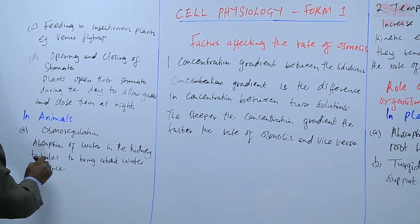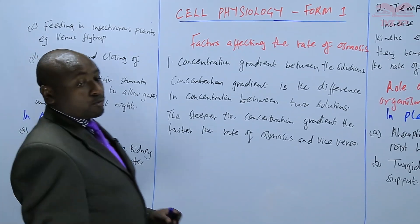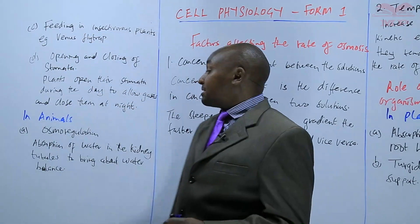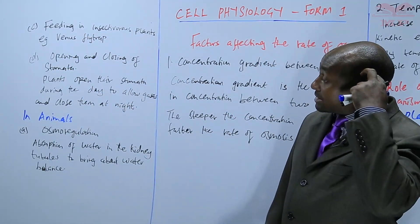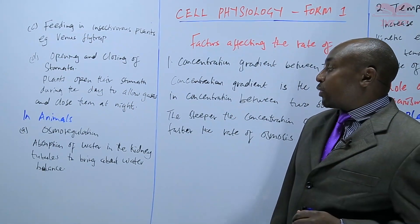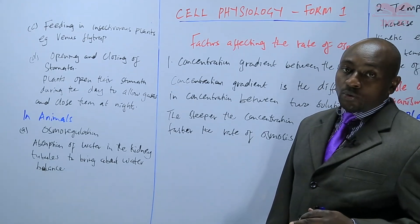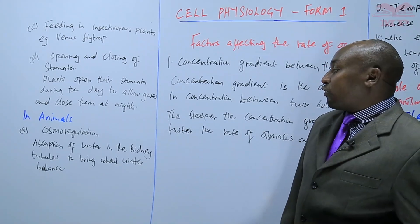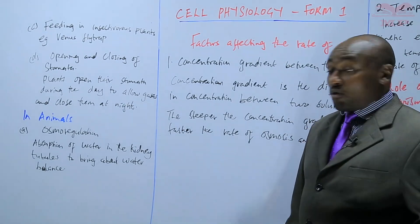So, animals are able to balance the amount of water that they are going to lose from their body or from their kidneys by osmosis. And this process is called osmoregulation, which means regulation of osmotic pressure of body fluids.